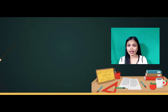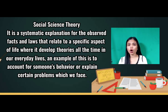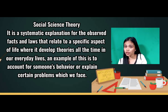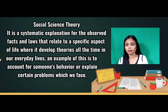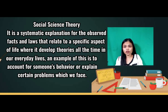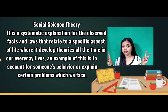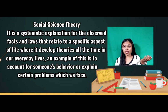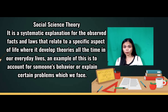Do you have any idea about the social science theory? According to the website I searched, social science theory is a systematic explanation where it observes laws that relate to a specific aspect of life, developing theories in our everyday lives. An example is accounting for someone's behavior or explaining a certain problem we have faced. These theoretical paradigms are important because they are studied to explain how society influences people and vice versa — how people are influenced by society — and each of these theories uniquely conceptualizes society's social facts and human behavior.